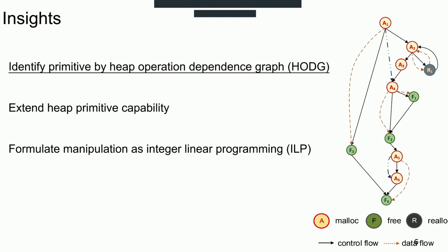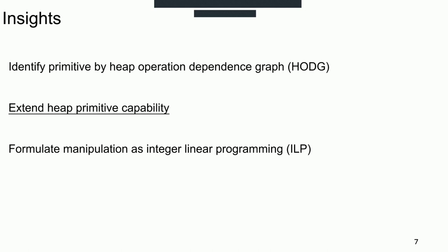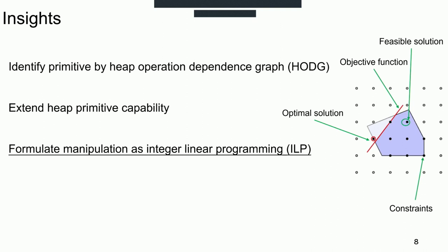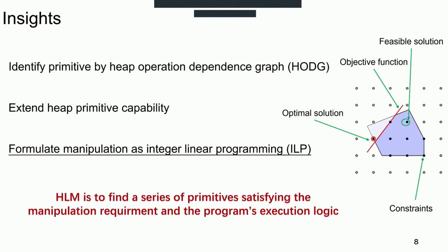Second, we extend the primitives capability. Third, we formulate the manipulation process as an integer linear programming model, which aims to find a series of primitives satisfying manipulation demands and execution logic. The ILP model contains constraints and objective function. We regard the invocation amount of primitives as a variable to be solved and find all feasible solutions within constraints. Then we leverage objective function to get the optimal one.